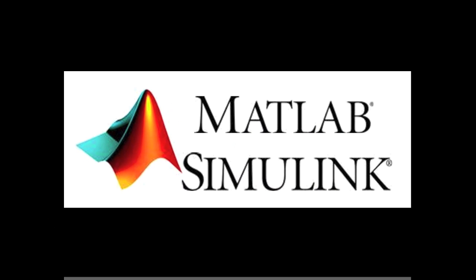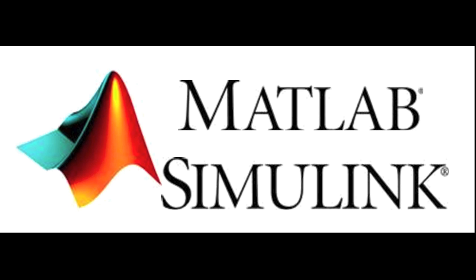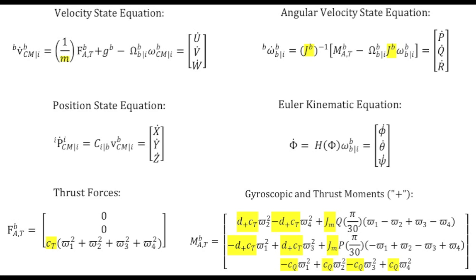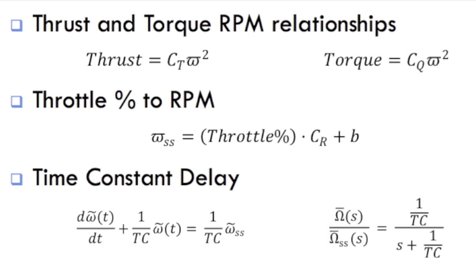We chose to make extensive use of MATLAB and Simulink, as this environment offered unparalleled power, flexibility, and user convenience. We'll begin with a look at the mathematics. These are the flight dynamic state equations we are using. Note that this system of equations takes four inputs in the form of rotor RPM and has 12 outputs representing states of the vehicle. Shown highlighted are the parameters we will be measuring, corresponding to equations describing thrust and torque as a function of RPM, and RPM as a function of both throttle command and time.